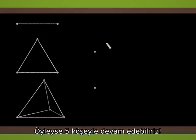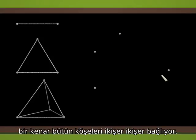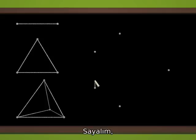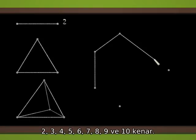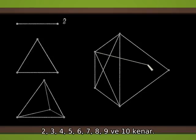Therefore, we can try to continue with five vertices. For the segment, the triangle or the tetrahedron, an edge connects each pair of vertices. So we have to connect the five vertices in pairs. We count one edge, two, three, four, five, six, seven, eight, nine, and ten edges.